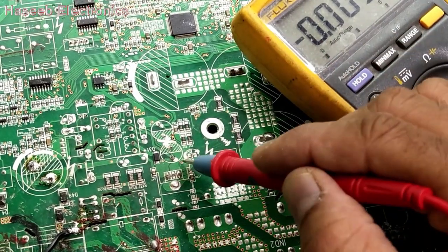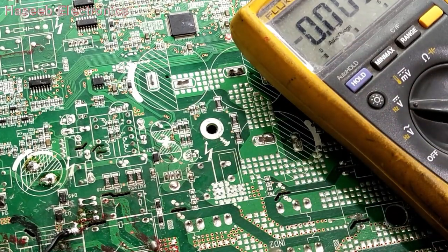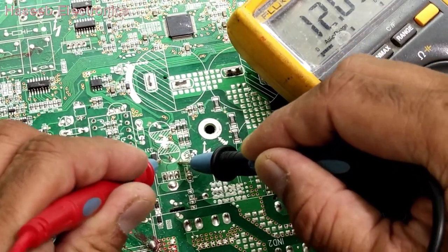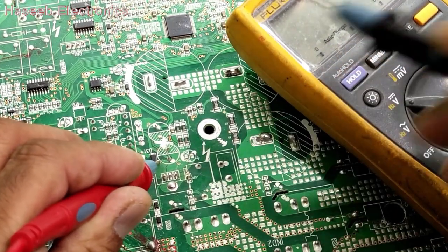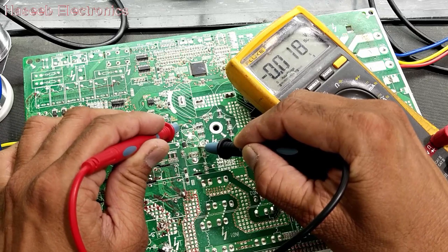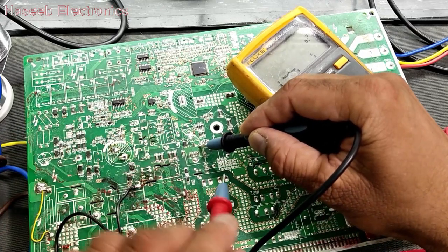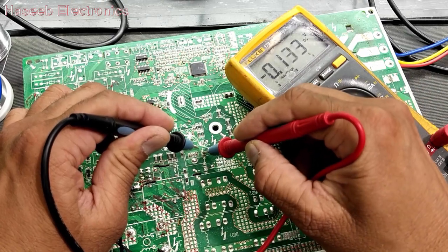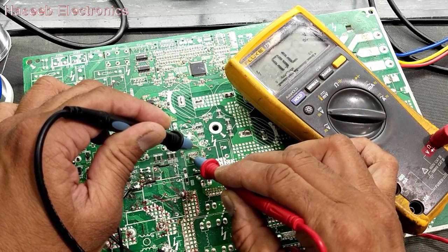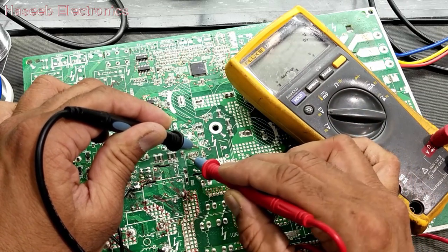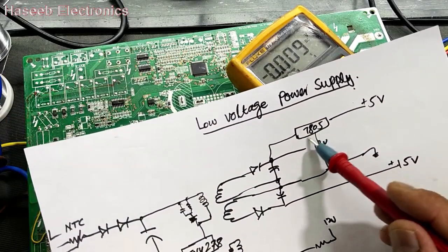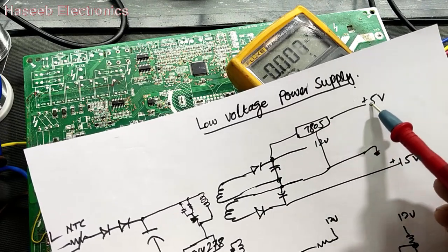We have to check on these test points. Connect the black lead at the common test point and check voltage — it is 12 volt. Check at this test point — 15 volt. And it is 5 volt. At pin number one of the 7805 IC it should be 12 volt — yes, 12 volt are applied to the 7805 IC, which takes 12 volt and gives us 5 volt regulated.